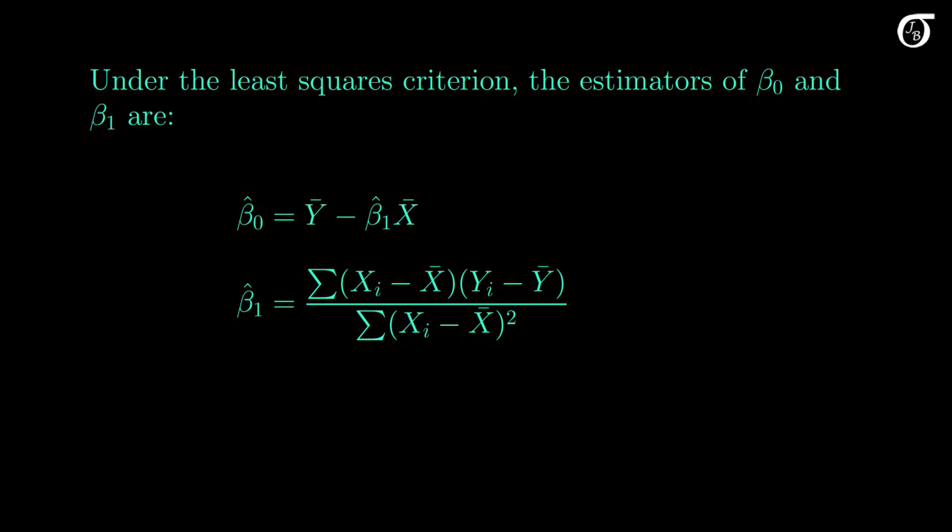Finally, to recap, under the least squares criterion, where we choose the parameter estimates that minimize the sum of squared residuals, these are the appropriate formulas for the estimators. Of course we don't typically calculate these by hand, and we will rely on software to calculate them for us. But the software will use these formulas, or an equivalent variant.